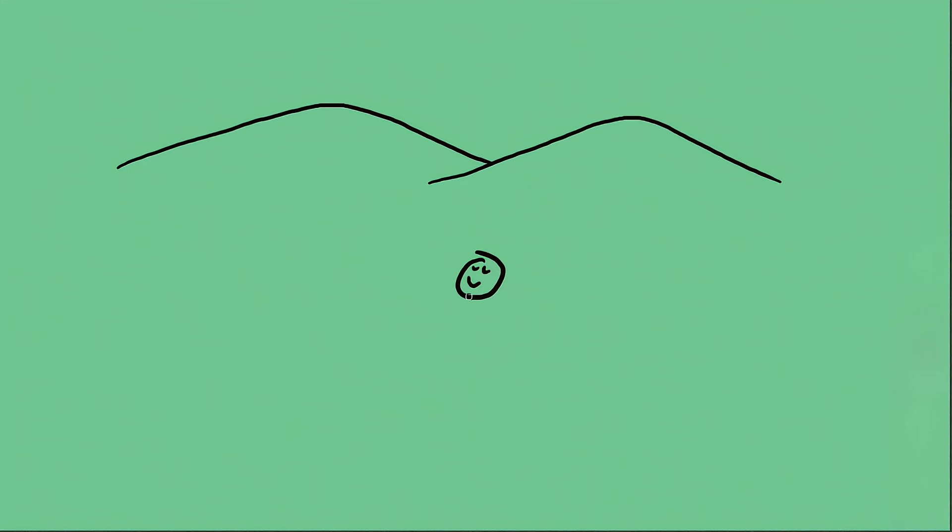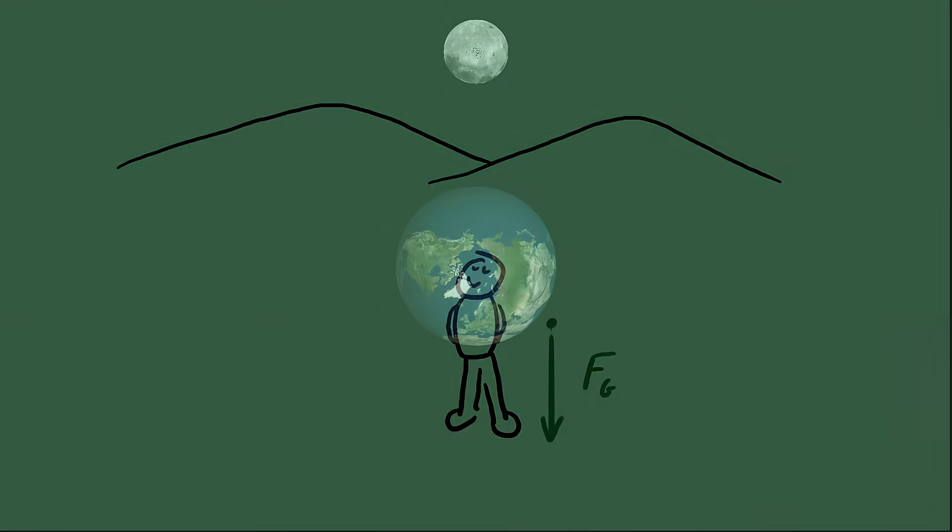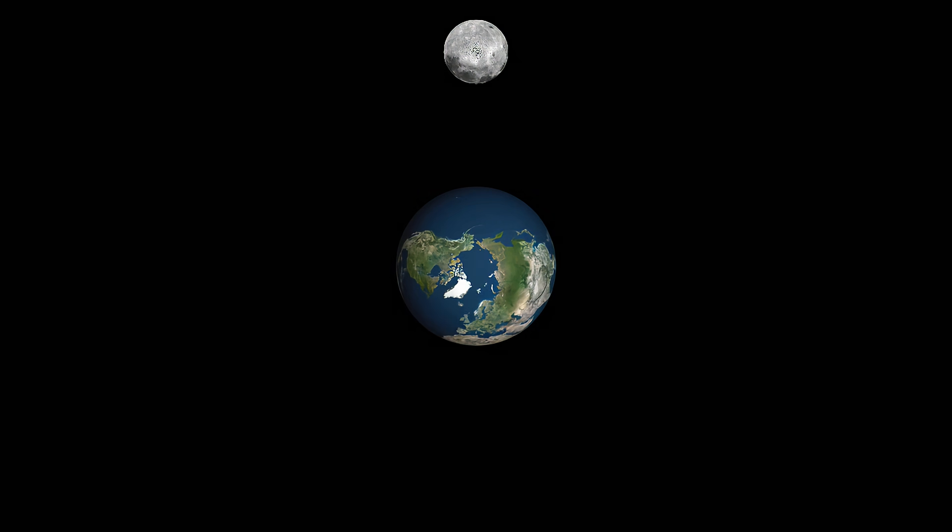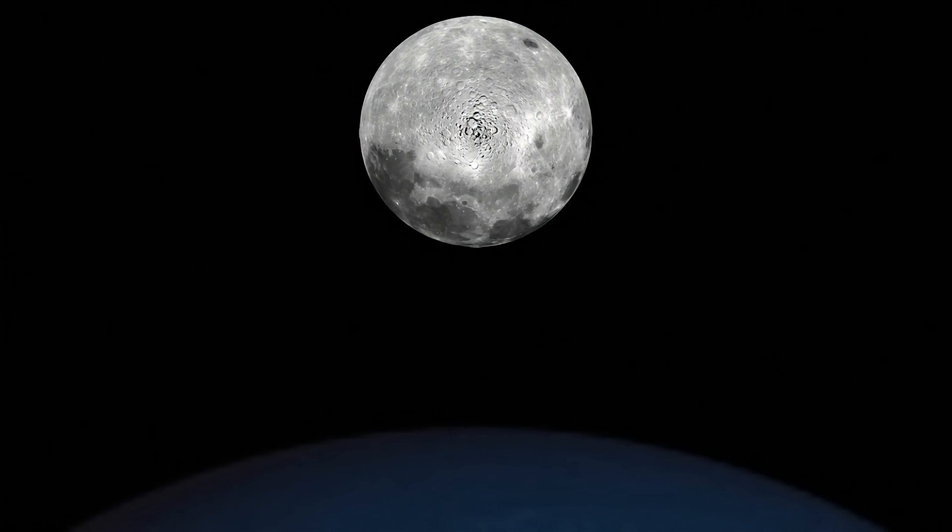The Earth's pull of gravity on your head is, for all intents and purposes, the same as it is on your feet. The moon, however, is thousands of kilometers wide. So the near side of the moon experiences a significantly stronger gravitational field from Earth than does the far side.